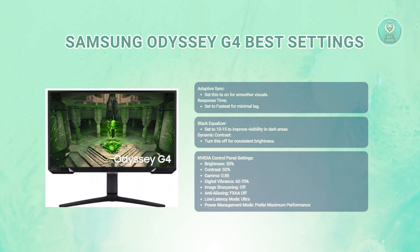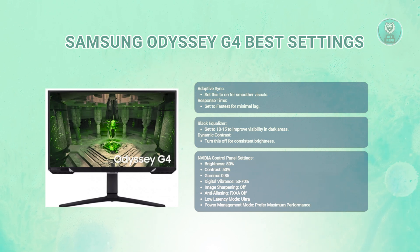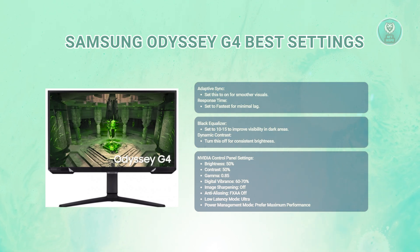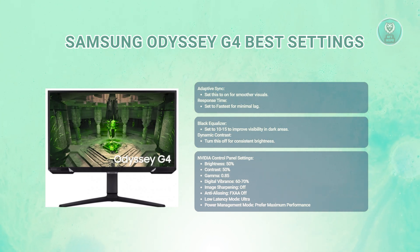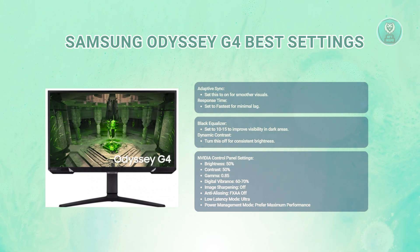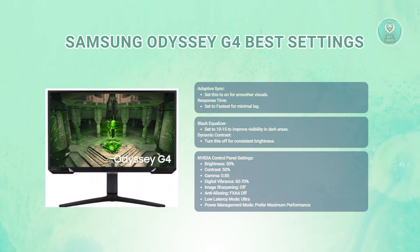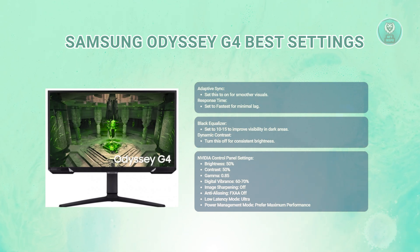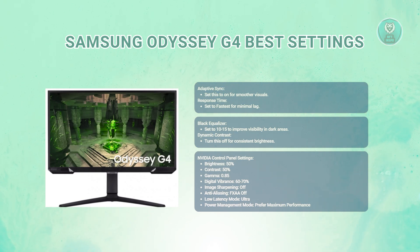If you're using NVIDIA, you could also adjust a few things in the NVIDIA Control Panel settings. Set brightness to around 50%, contrast to 50%, gamma around 0.85, digital vibrance around 60% to 70%, image sharpening off, anti-aliasing FXAA off, low latency mode to Ultra, and power management mode to Prefer Maximum Performance.